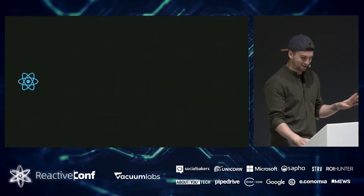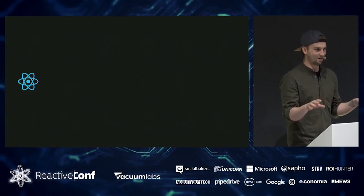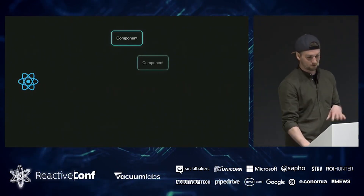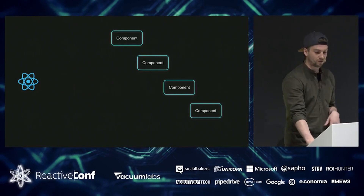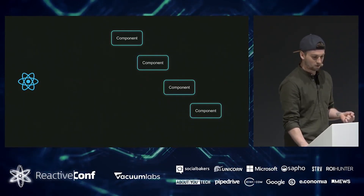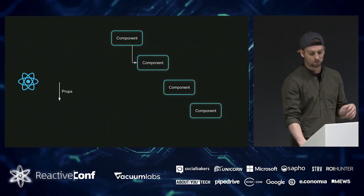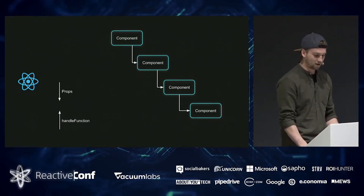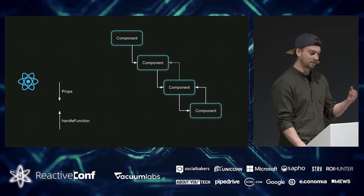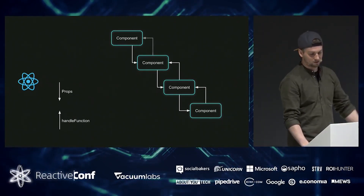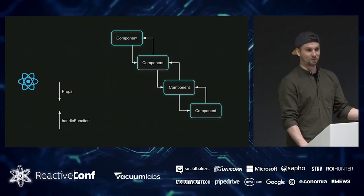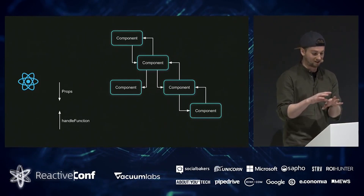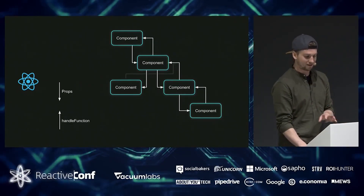Since everyone knows React, there's not a lot to cover about the basics. With the normal way to handle your state, you have components and child components, and whenever you want to pass down state you have to do that via props. If something changes in a child component, you have to declare a handler function to bubble that state all the way up to the root element. That gets even more confusing if you add another component somewhere along the way.